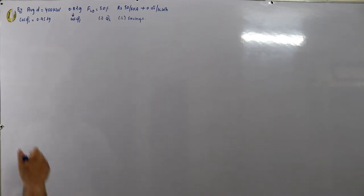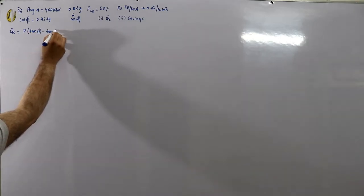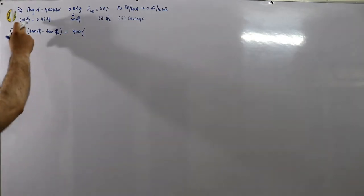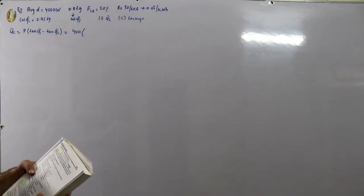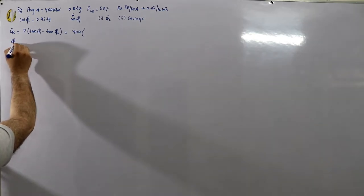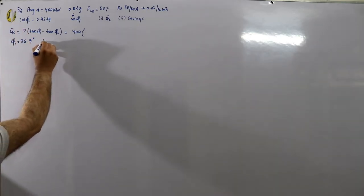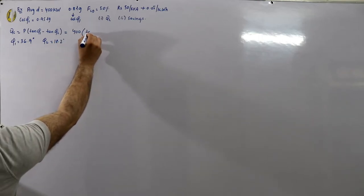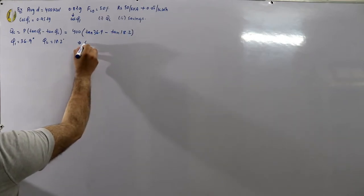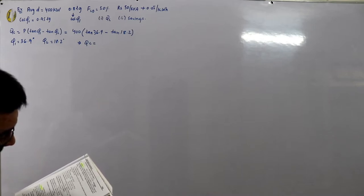For Qc, we have the formula: Qc = P × (tan φ₁ − tan φ₂). P is given as 400 kilowatts. φ₁ = cos⁻¹(0.8) = 36.9°, and φ₂ = cos⁻¹(0.95) = 18.2°. Please verify these calculations yourself. From here, Qc comes out to be 337 kVArs leading.